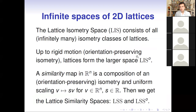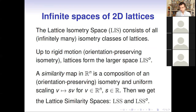In addition to these two equivalence relations, there is also similarity between lattices. A similarity map is a composition of an isometry — which could have an extra restriction on orientation — plus uniform scaling, where we make all vectors larger by a constant factor s. Today we will consider all four equivalence relations.